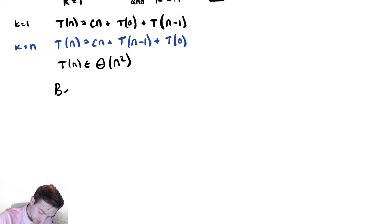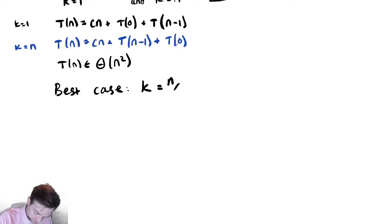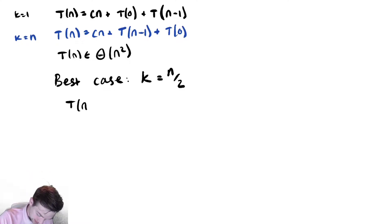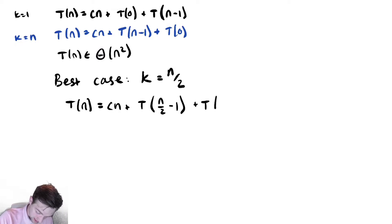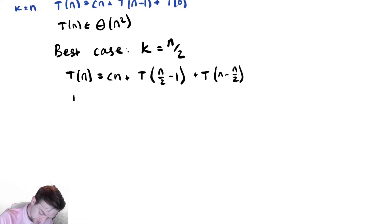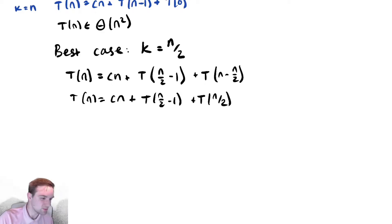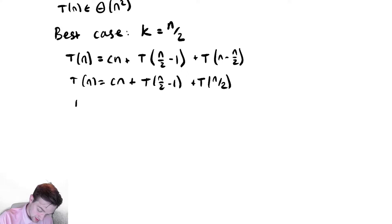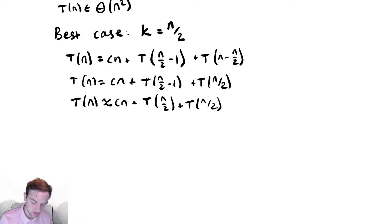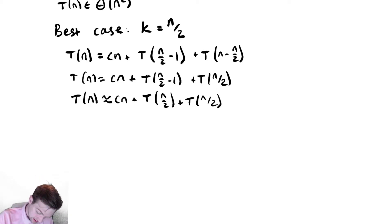Let's talk about the best case runtime. The best case is that we make a very even split — the element we select is near the middle, like n over 2. With k equals n over 2, we get T(n) equals cn plus T(n/2 minus 1) plus T(n/2), which simplifies approximately to T(n) ≈ cn plus 2·T(n/2). This is the exact same recurrence relation we saw with the median example and with merge sort. So our best case is T(n) in Θ(n log n).